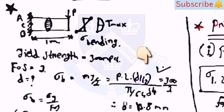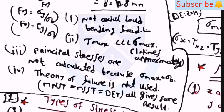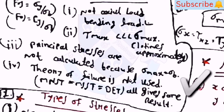You can use the equation sigma_b = M·y/I = P·L·d/2 divided by (π/64)·d⁴. The value of d will be 13.8 mm. This is a bending load case, and tau_max is much less than sigma_max. Principal stresses are not calculated because sigma_max equals sigma_b, and theories of failures are not used because by MNST, MSST, or distortion energy theory, the values of sigma_b remain the same.